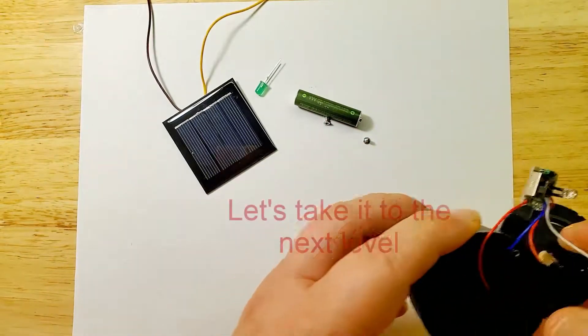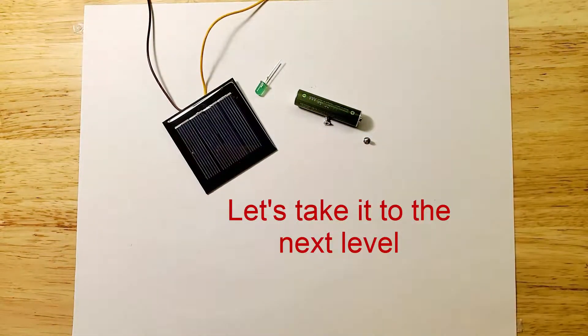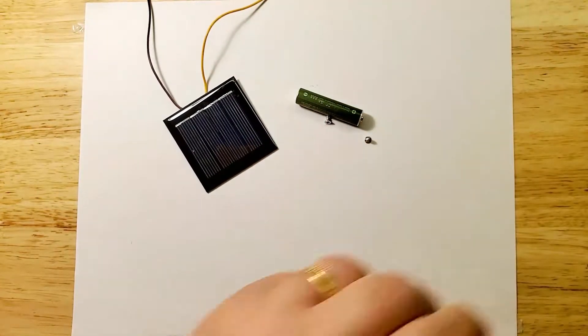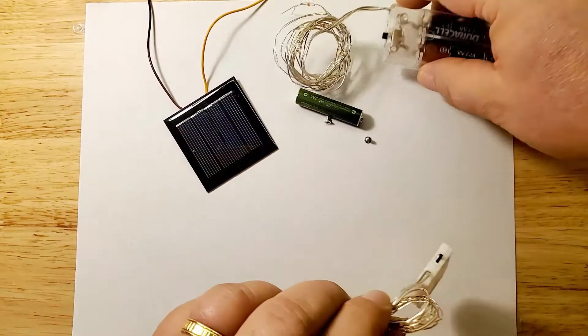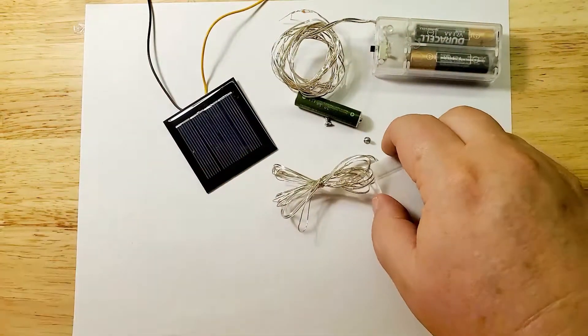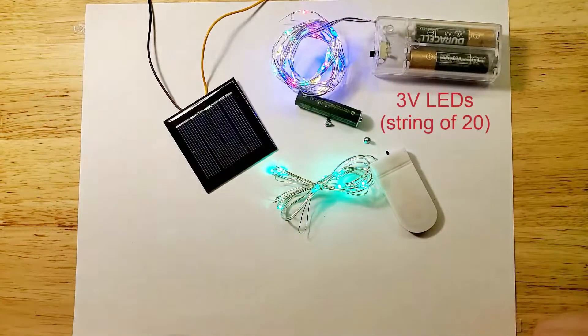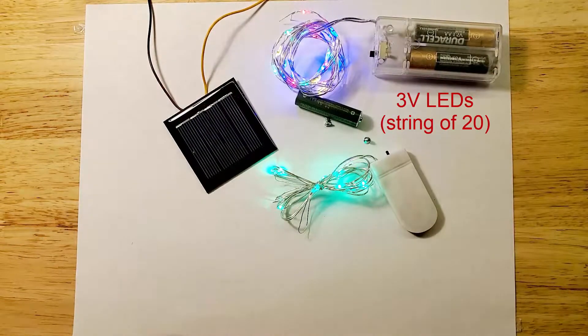One LED? I think we can do better than that. With our upgraded battery and solar panel, we can go for one of these 20 LED strings. If you do this, you have to remember to get the 3 volt model. You can tell they are 3 volt if they use two AA's or these coin cells.